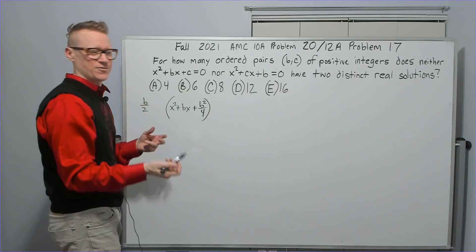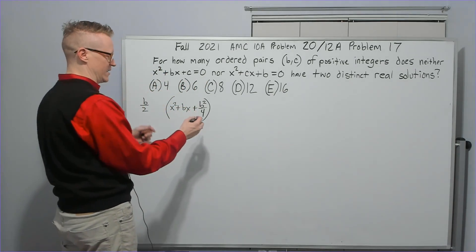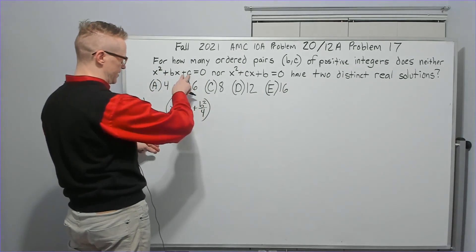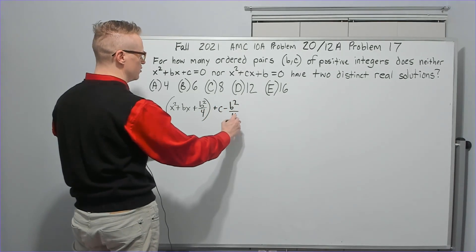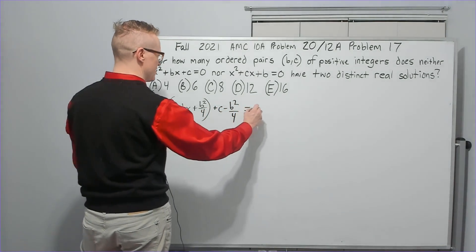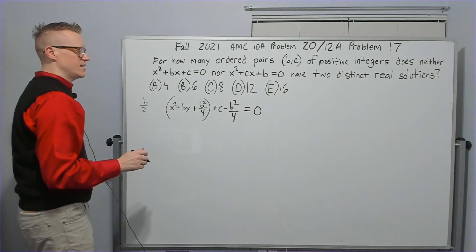So we're going to have, I'm going to put the c first, plus c minus b squared over 4. And this is now equal to 0.